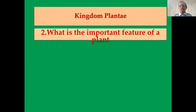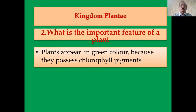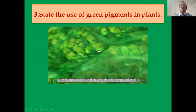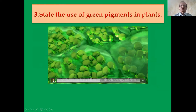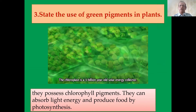Another important feature of a plant: plants appear green in color because they possess chlorophyll, a green color pigment. Chlorophyll absorbs light energy — especially solar energy — and produces food. The simple sugar glucose is produced by photosynthesis.